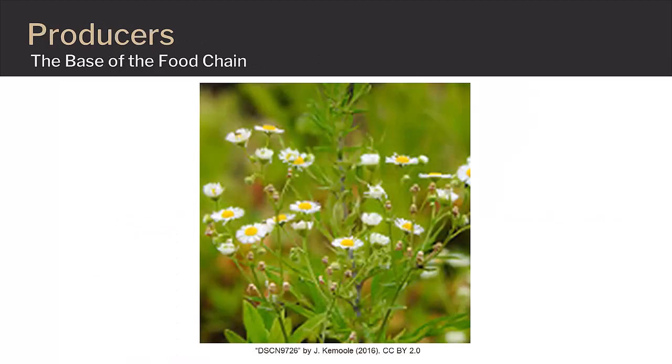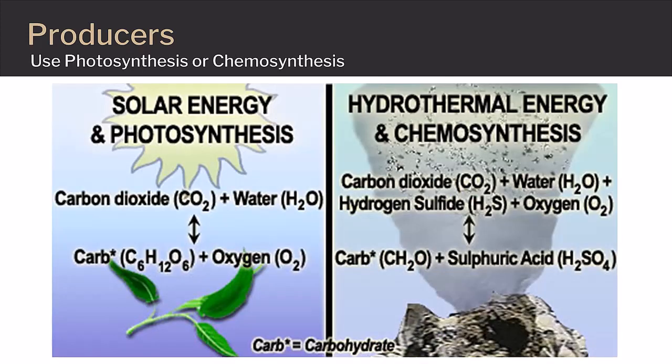Producers must make up the base of any food chain, also known as the first trophic level. These organisms are capable of transforming inorganic compounds into organic compounds that can be used in the process of respiration, where organisms access energy for life processes like growth, movement, and reproduction. Producers use either the process of photosynthesis or chemosynthesis to accomplish this.